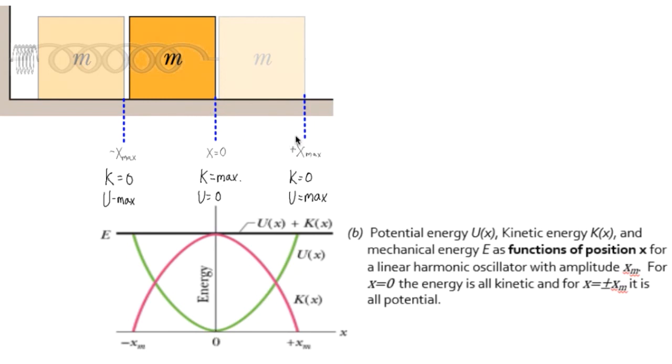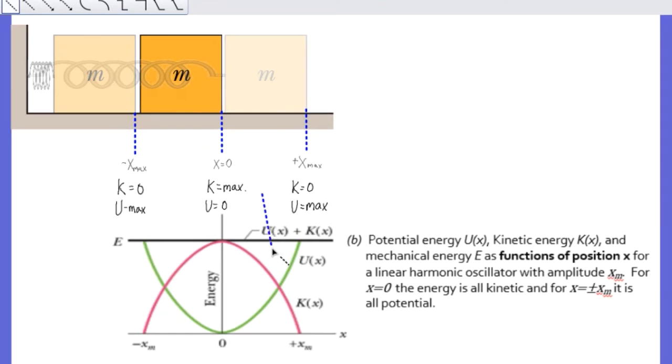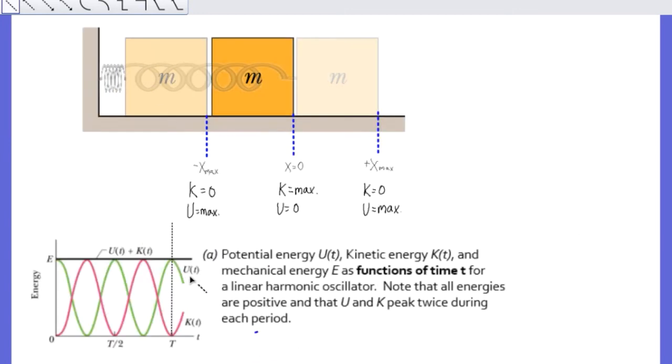Then at the extremes, I have maximum potential energy in green and zero kinetic energy in red. And anywhere in between, if I were to take a point, say right here, this value of potential plus this value of kinetic will add to the total amount of energy, which is indicated by this black line. And notice that that does not change, just like it did not change in this graph either. The sum of the energies is constant.